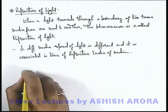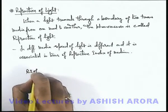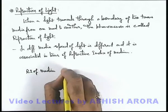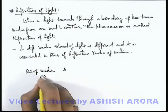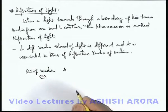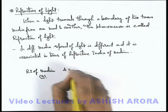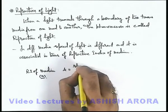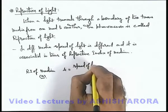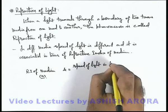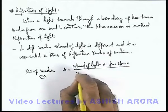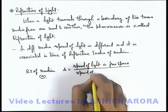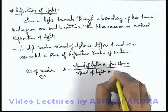The refractive index of a medium is denoted by the term mu, which is a Greek letter, or sometimes it is also denoted by the symbol of small letter n. This refractive index is defined as the ratio of speed of light in free space to the speed of light in the medium.